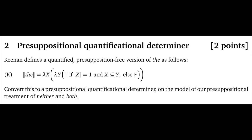Your task is to convert this to a presuppositional quantificational determiner on the model of our presuppositional treatment of 'neither' and 'both'. Two things: first, yes, this is very simple. If you understand the meanings of 'neither' and 'both' that we defined as partial functions, then this question will be very easy for you — there are no tricks. Second, make sure that you define this as a quantificational determiner meaning. If you copy over our version of 'the', which is a function from sets to entities, you're not going to get any credit. Make sure what you offer is like 'both' and 'neither' in terms of the semantic type.